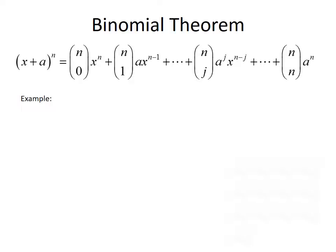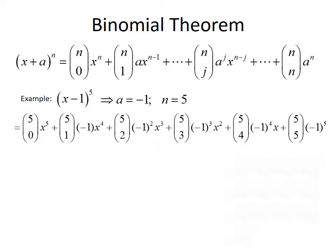Let's use the binomial theorem to evaluate x minus 1 to the 5th power. Here a is equal to negative 1 and n is equal to 5. Plugging in, we get 5 choose 0 times x to the 5th, plus 5 choose 1 times negative 1 times x to the 4th, plus 5 choose 2 times negative 1 squared times x cubed, plus 5 choose 3 times negative 1 cubed times x squared, plus 5 choose 4 times negative 1 to the 4th times x, plus 5 choose 5 times negative 1 to the 5th. Notice that with each term, j increases by 1, the power on a increases by 1, and the power on x decreases by 1.